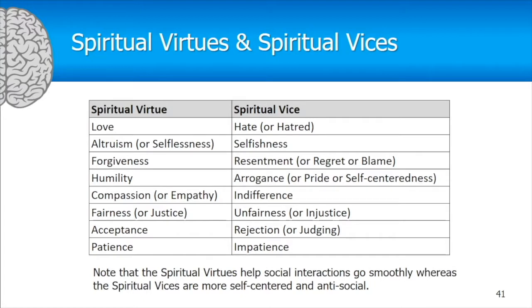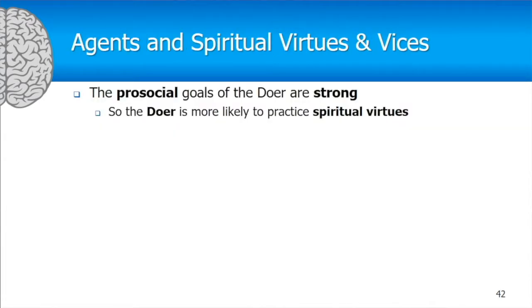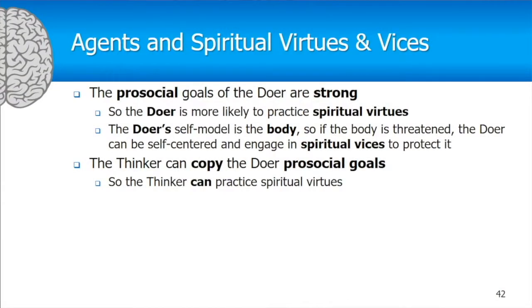Spiritual virtues all help social interactions go more smoothly — so for a social animal, practicing spiritual virtues is a good thing. Spiritual vices tend to be self-centered and anti-social, working against our prosocial goals. The doer's prosocial goals are strong, making the doer more likely to practice spiritual virtues. However, if the body is threatened, the doer will do whatever is necessary to protect it, including engaging in spiritual vices like stealing. The thinker can also copy the doer's prosocial goals and practice spiritual virtues.